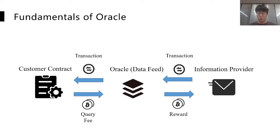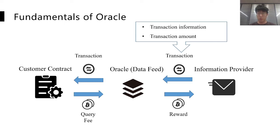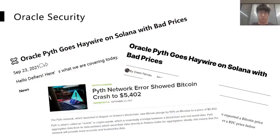There are mainly two ways for information providers to include their information into transactions. The first one is to simply attach the information to the transaction — there is a certain space which allows the information provider to write different kinds of messages. The second one is to use the transaction amount to represent the information they provide. For example, if the customer wants to know the exchange rates of two different assets, the information provider can simply transfer these two kinds of assets to the Oracle according to the exchange rate it wants to provide.